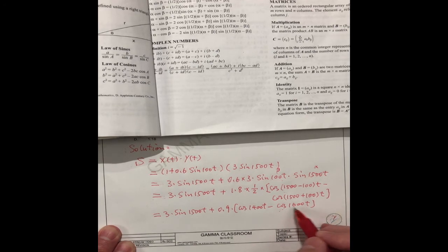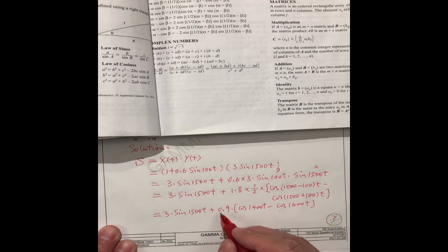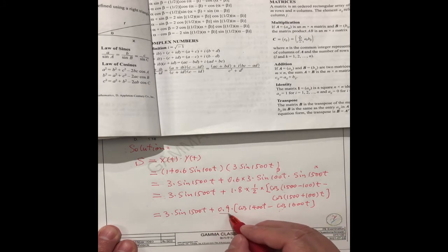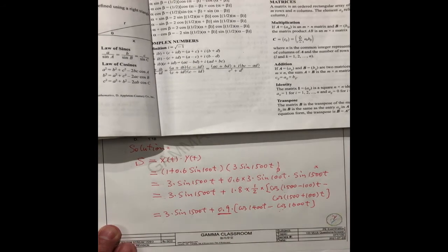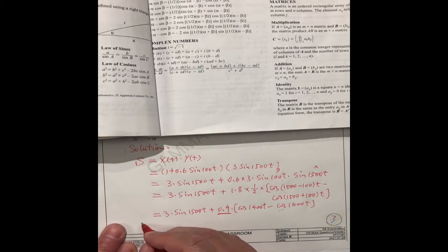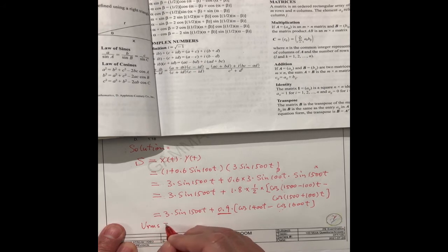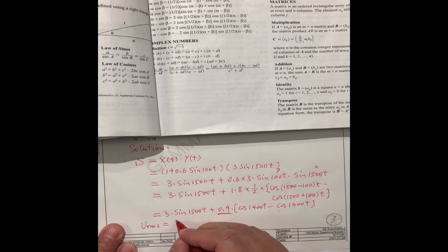So the coefficient is 0.9, this is the maximum value. So we can get the voltage RMS equal to max value 0.9 divided by root 2.